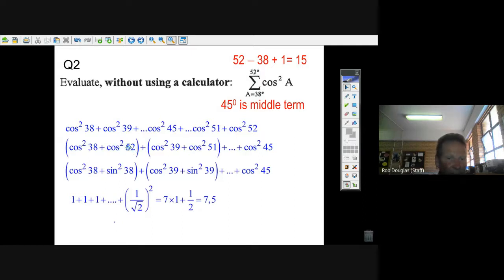And that's where we keep going. We take this cos squared of 38, we put it with the cos squared of 52, and we take the cos squared of 39 and we put it with the cos squared of 51, with all of them. And this cos squared of 45 in the middle.